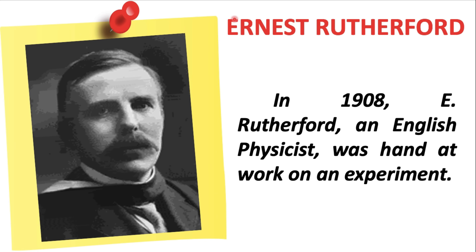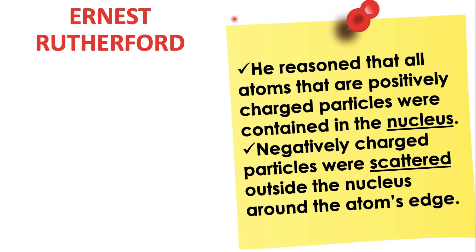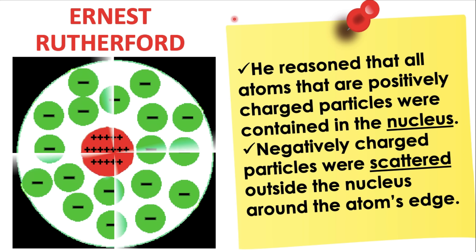Next, let us have Ernest Rutherford. In 1908, Ernest Rutherford, an English physicist, was hard at work on an experiment. He reasoned that all positively charged particles were contained in the nucleus. As you can see, all the protons were contained in the nucleus, while the electrons were scattered outside the nucleus around the atom's edge. This is the Ernest Rutherford atomic model.